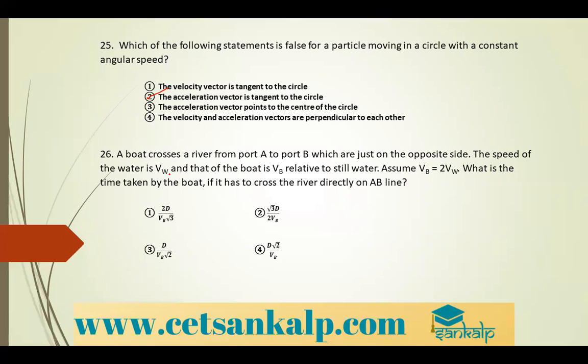Last problem: a boat crosses a river from port A to port B on the opposite side. The speed of water is VW and the speed of the boat relative to still water is VB, where VB = 2VW. Find the time taken to cross the river directly along line AB.